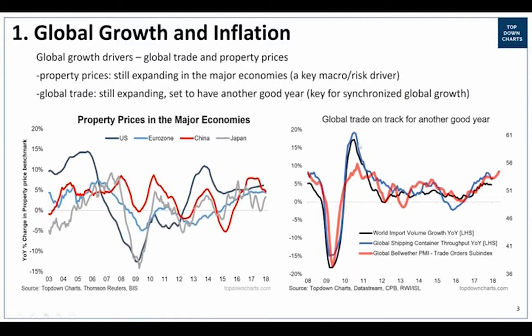The other key indicator is global trade. You might have heard about the idea of the synchronised global economic upturn - global trade is really a key transmission mechanism for that. If global trade is doing well, then emerging markets and export-oriented economies tend to do well. What drives better global trade is typically better demand from the major consumer economies. We had a good rebound out of what was almost a global trade recession in 2015, and now the leading indicator in the red line is pointing to a pretty solid year for global trade.